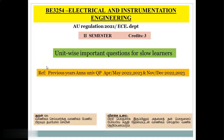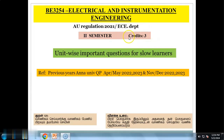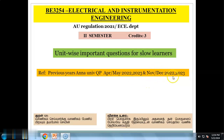Good morning to all. BE3254 Electrical and Instrumentation Engineering is a subject given for the 2nd semester ECE department in Anna University Regulation 2021. It is a 3 credit paper. For this subject, we are going to discuss Unit 1 important questions for slow learners. These important questions are prepared with the help of previous year Anna University question papers: April-May 2022-23 and November-December 2022-2023.